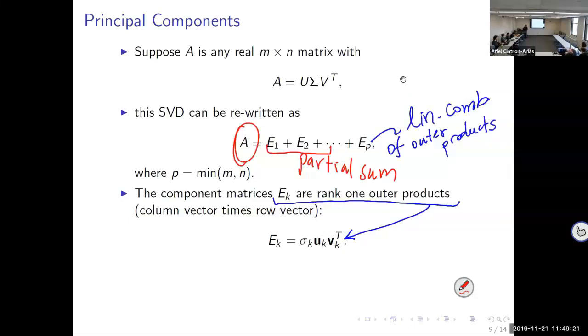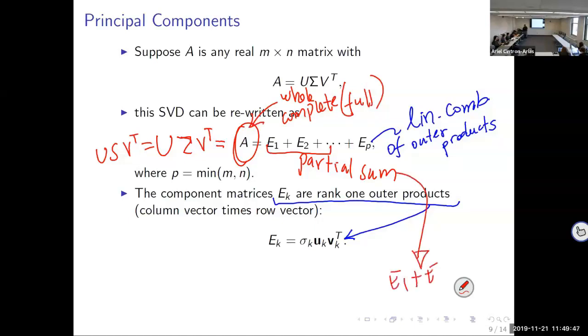So here A, remember what we're saying is that A is of the form U sigma V transpose. You could also write U S V transpose. So this would be A as a whole or complete or full. And the partial sums, each partial sum is maybe E1, E2, E3. That's not the entire sum.